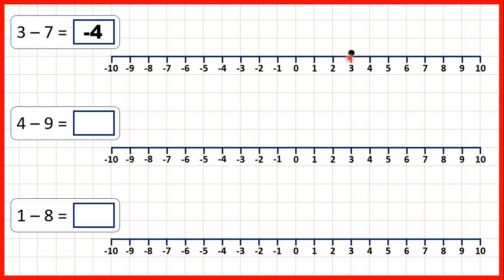Now we could have also solved this by first subtracting three from three. And three minus three is zero. But then, because we need to subtract seven, we need to subtract another four. Because if we subtract three and then subtract four, we've subtracted seven altogether. And zero minus four is minus four. So that's our answer.